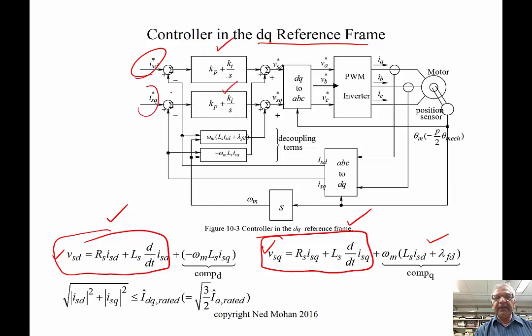To get the reference for D-axis and Q-axis voltages, we add the compensation terms which are coming here. Adding those two, we get the reference voltages for VSD and VSQ.